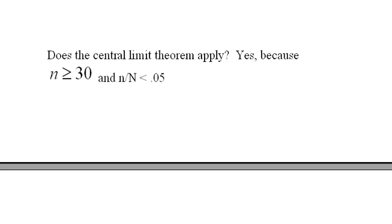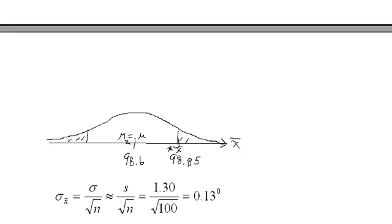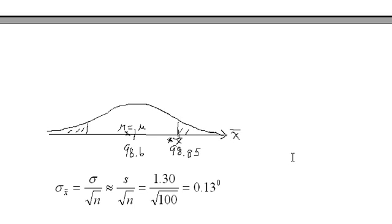So if the central limit theorem applies all these nice things happen. Well if we take millions of samples of size 100 and look at the means of each sample then all the sample means will make a nice bell curve like this.